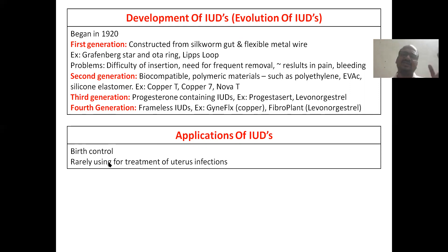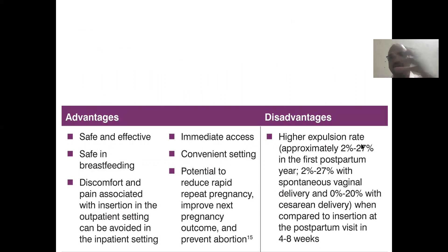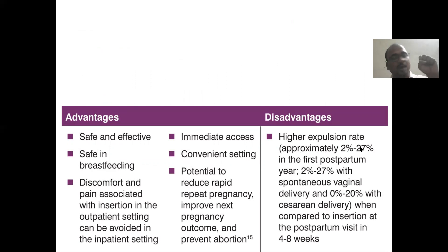Applications are mainly for birth control. Sometimes a drug such as antibiotics can also be placed in the cylinder for local treatment of uterine infections. Advantages: it is very safe and effective, provides immediate protection, is safe during breastfeeding, and has no problem with concomitant use. A disadvantage is a higher expulsion rate — the copper T can come out of the uterus during sitting or other movements.